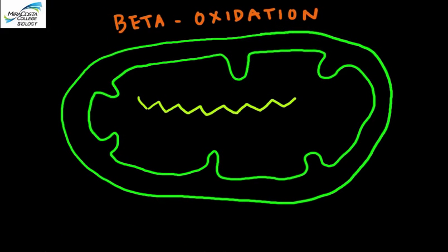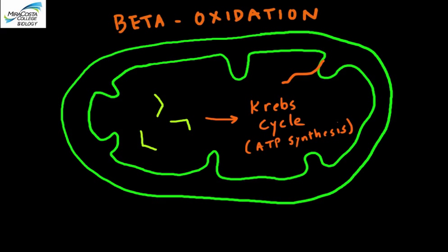And in the mitochondrion, it undergoes beta-oxidation, where the long chains of fatty acids are broken into two carbon bits called acetyl-coenzyme A, which are then taken up by the Krebs cycle. From this point on, everything is exactly the same pathway as what we discussed earlier for the aerobic metabolism of glucose.